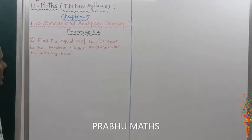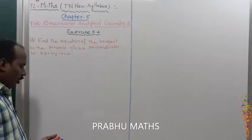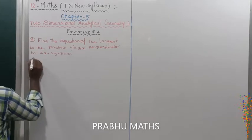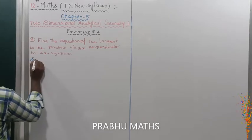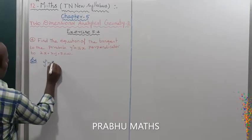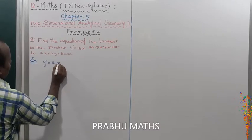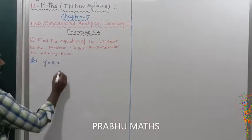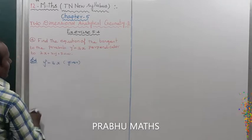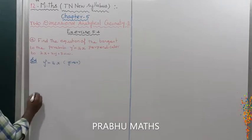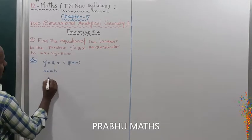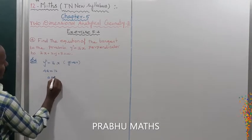So to find the m value and the a value, first of all, the given parabola is y² = 16x. From the standard form y² = 4ax, comparing coefficients, 4a = 16.